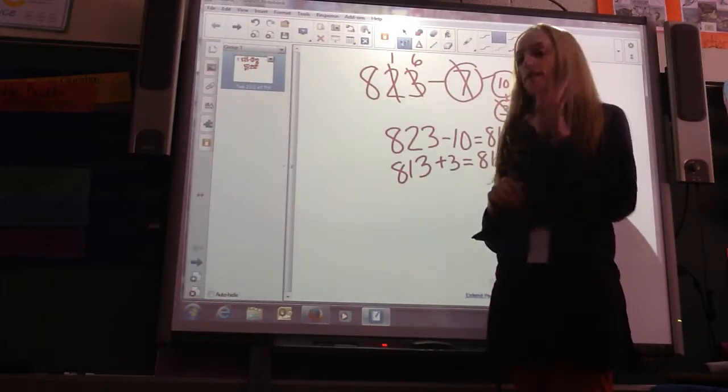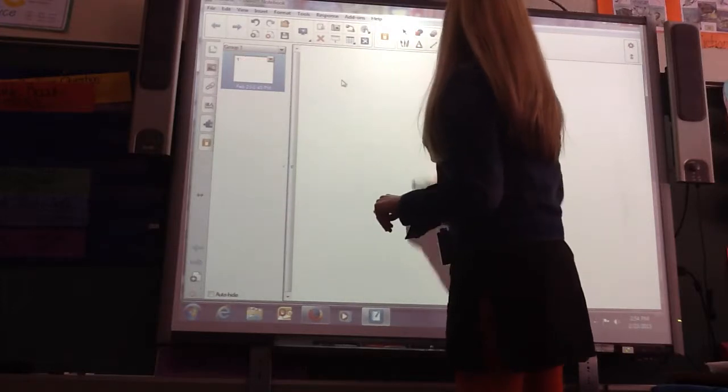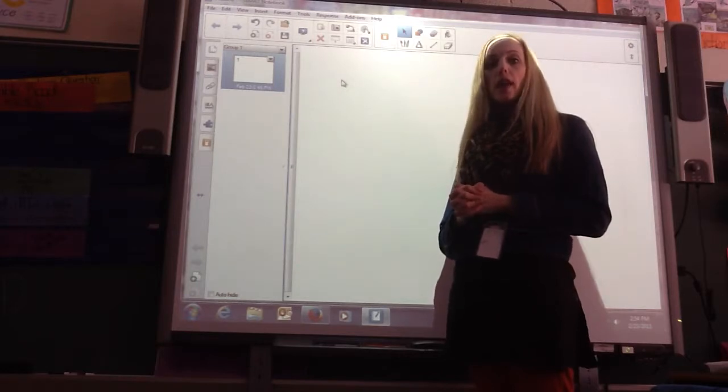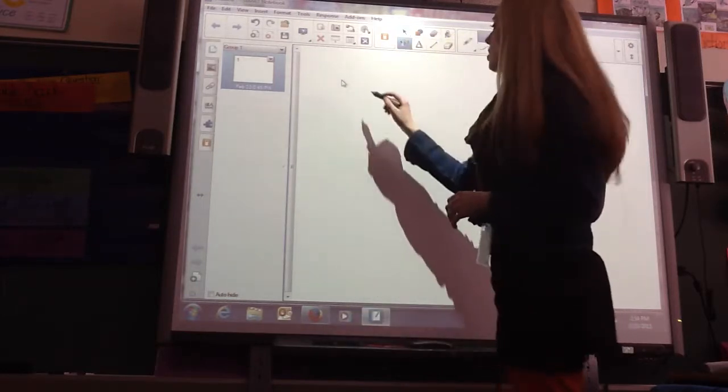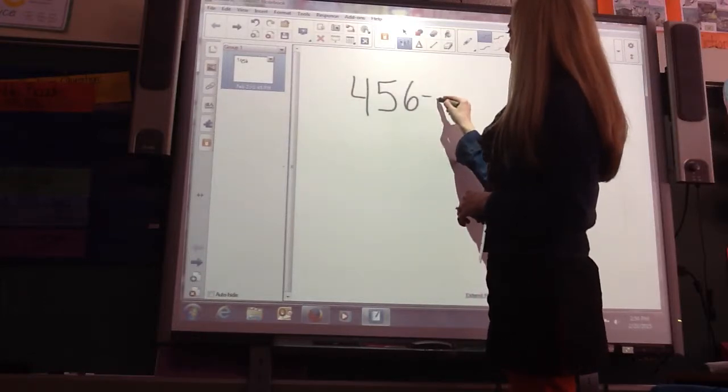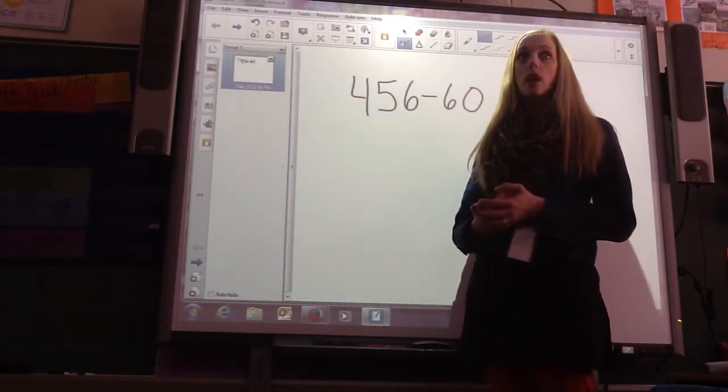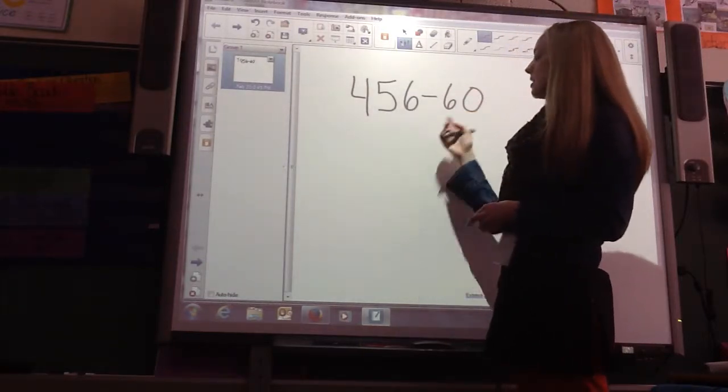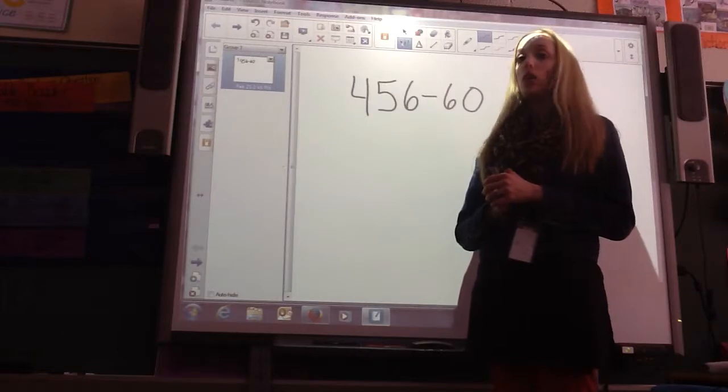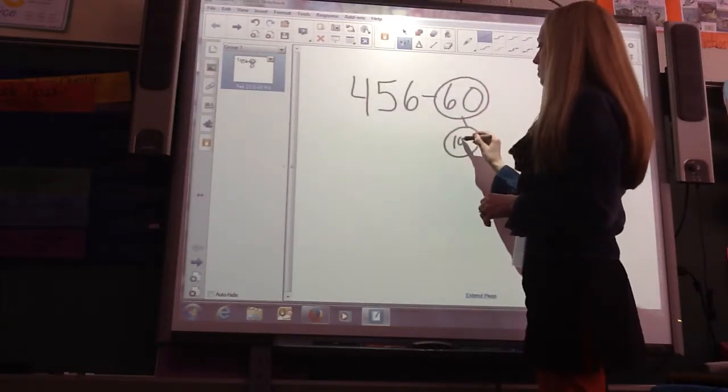Now, we're going to do strategy number 5. And, this is subtract 100 and add the extra tens. So, if I had 456 minus 60. Again, I start every problem. What are we subtracting? The hundreds, tens, or ones? In this case, we're subtracting the tens. If I have 5 tens, can I take 6 tens away without regrouping? No. So, I'm going to turn this in to a 100 bond. 100 number bond.